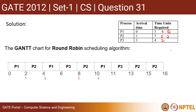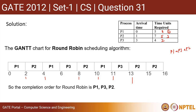So P1 will complete first — there is no doubt about it. Then P3 comes and it has two quantum left, so it finishes. P3 completes next. Then P2 completes last. So for round robin, the completion order is P1, P3, P2.